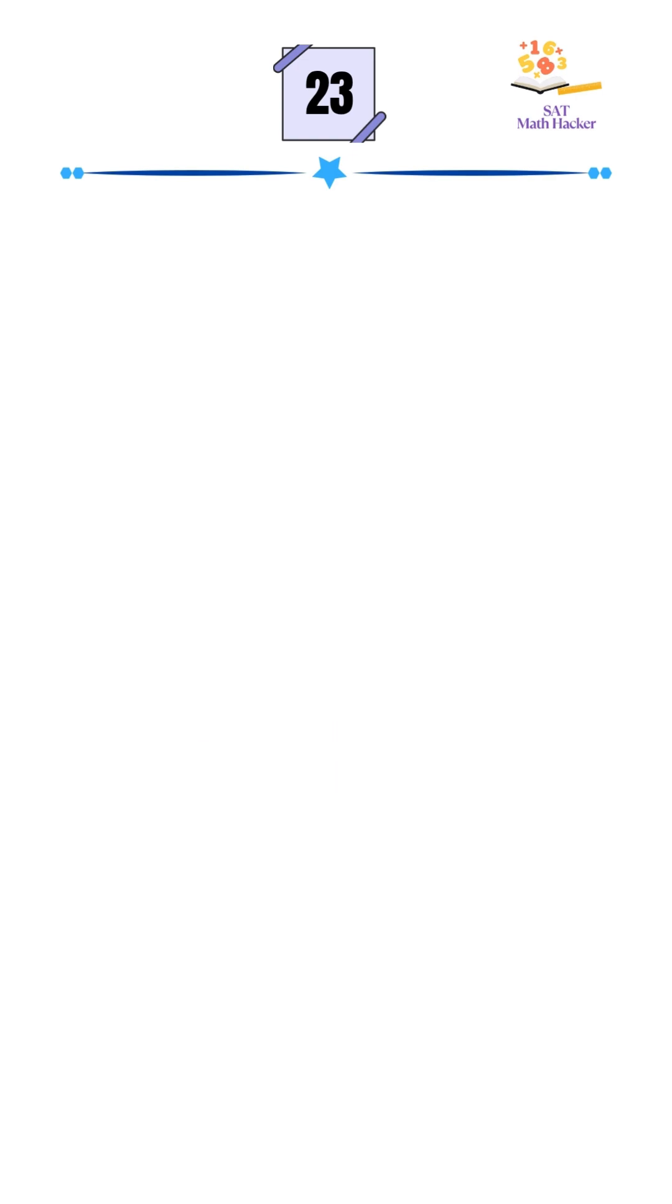After simplifying we get 4 minus 2 times square root of 3 divided by 2. Then we factor out a 2 from the numerator and cancel it with the denominator, leaving us 2 minus square root of 3.